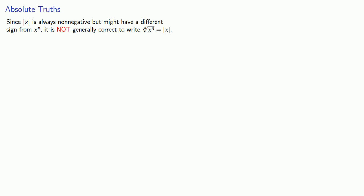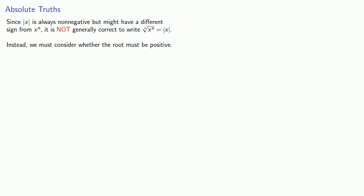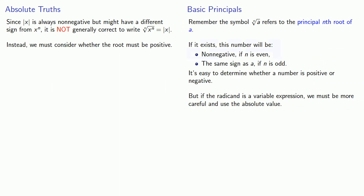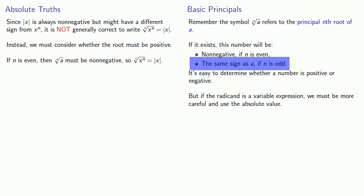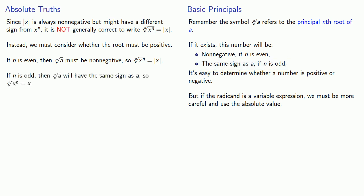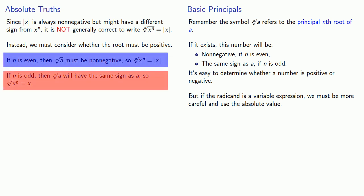We can go a little further. Since |x| is always non-negative but might have a different sign from xⁿ, it is not generally correct to write ⁿ√(xⁿ) = |x|. Instead, we must consider whether the root must be positive. If n is even, then the nth root must be non-negative, so ⁿ√(xⁿ) = |x|. But if n is odd, then the nth root must have the same sign as a, so ⁿ√(xⁿ) = x with no absolute value. In other words, use absolute value for even index roots, and don't use absolute value for odd index roots.